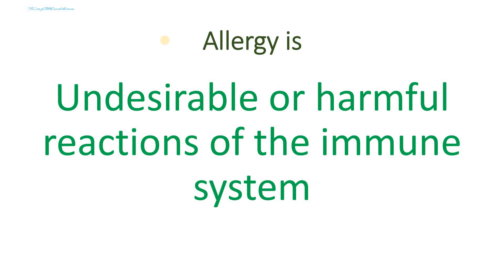You may be born with a weak immune system — this is called primary immunodeficiency. You may get a disease that weakens your immune system — this is called acquired immunodeficiency. You may have an immune system that is too active — this may happen with an allergic reaction. Or your immune system may turn against you — this is called autoimmune disease. Allergy is an undesirable or harmful reaction of the immune system; in other words, hypersensitivity.